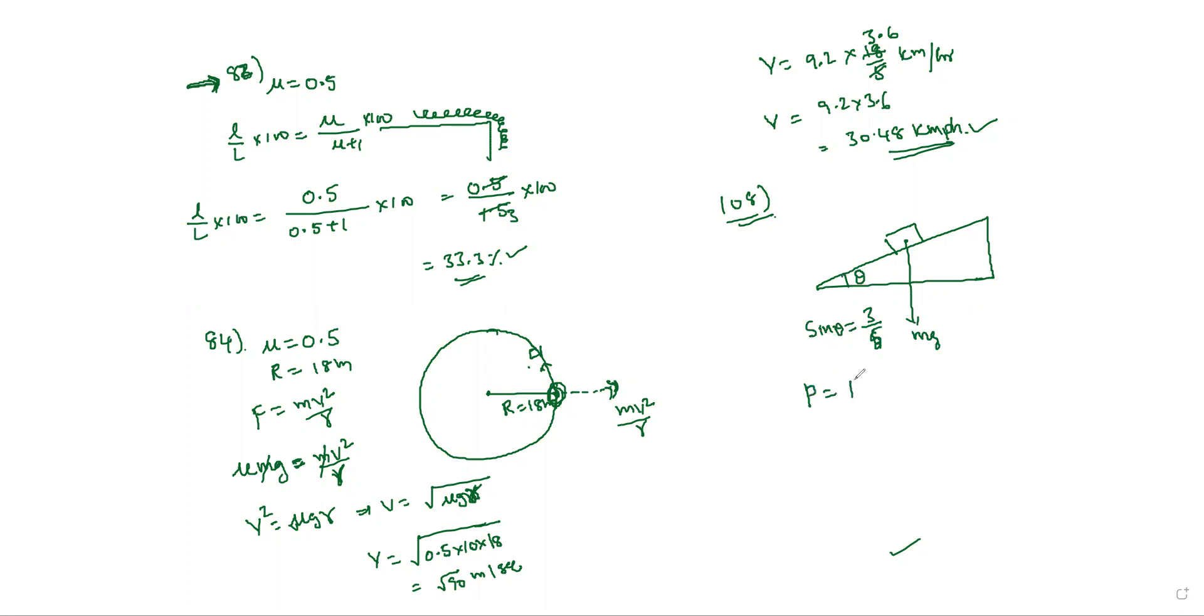So the power formula is P equals F into V. P is equal to mg sin theta into V. So power P equals M, 500 kg, and G value is 9.8, sin theta equals 3 by 5.